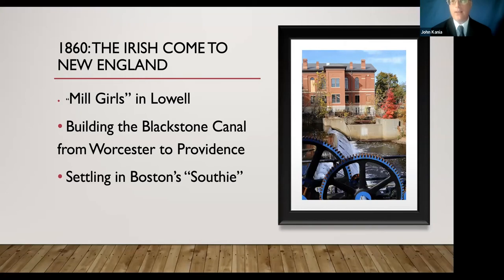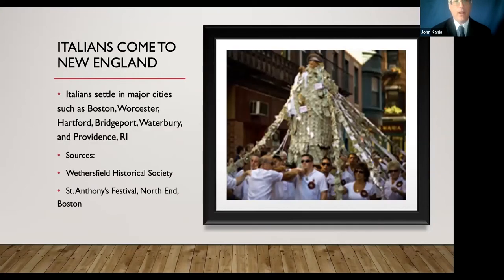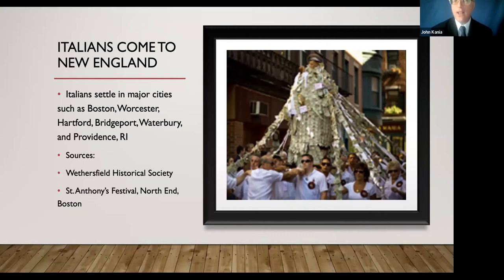The next group are the Italians. This is a picture of St. Anthony's Festival in the North End of Boston — it's a recurring festival. We know that Italians settled in the major cities of Boston, Worcester, Hartford, Bridgeport, Waterbury, and Providence. In Providence, Federal Hill is where the Italian enclave was. In Worcester, it was the Shrewsbury Street area. Boston is the North End. One of the questions we ask is how do we figure out or note the presence of an immigrant group?